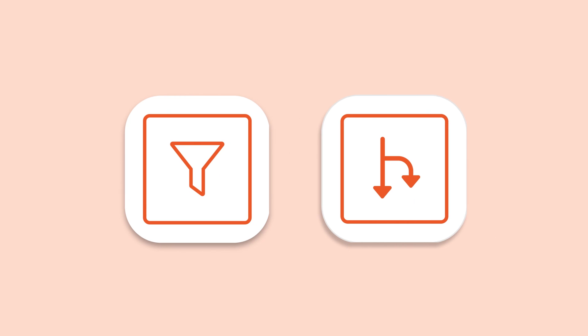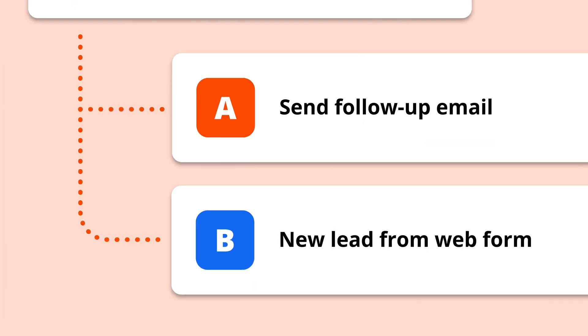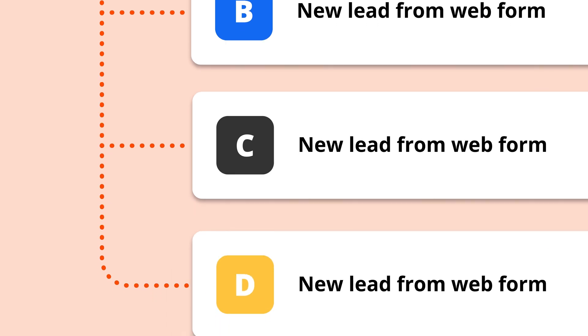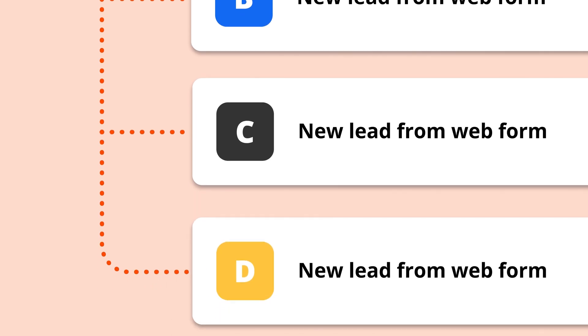It sounds kind of like a filter step, doesn't it? And just like a filter step, you also set up criteria in Paths and decide which actions should occur when those rules are met. The difference is that a filter step has only one trail of information it acts on — the rest is filtered out. However, Paths have multiple trails of information they can act on. Data filtered out of A can be used in B to run a different action if it meets the criteria.